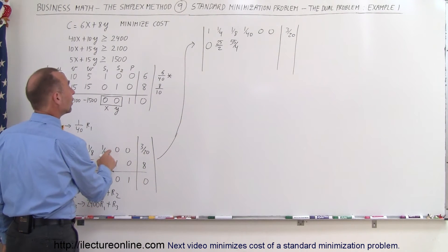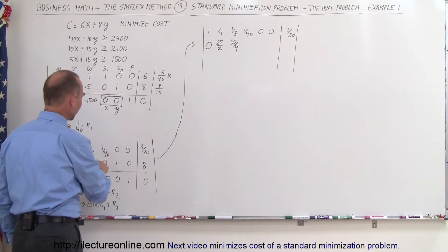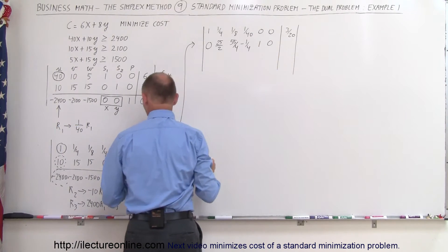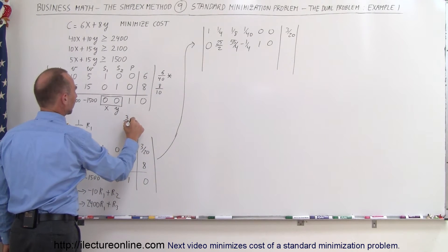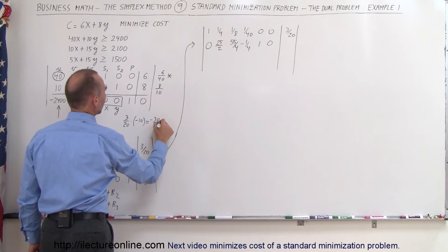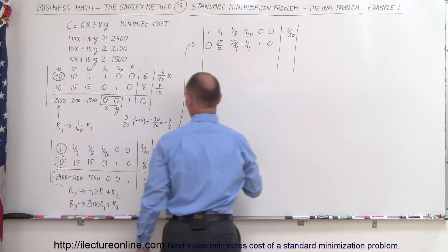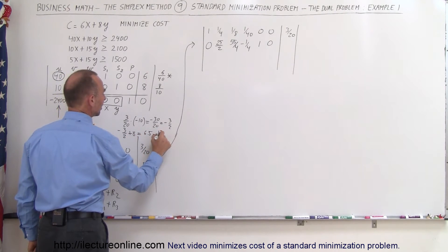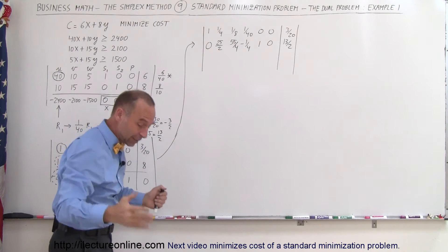Next we have negative 10 times 1/40, which is negative 1/4, added to 0, giving negative 1/4. Negative 10 times 0 — nothing changes. Then negative 10 times 3/20: that would be negative 30/20, which is negative 3/2. Adding that to 8 gives negative 3/2 plus 8, which is 6.5, or 13/2. Those numbers are kind of a pain, but that's how it's done. Sometimes it helps to have a calculator.